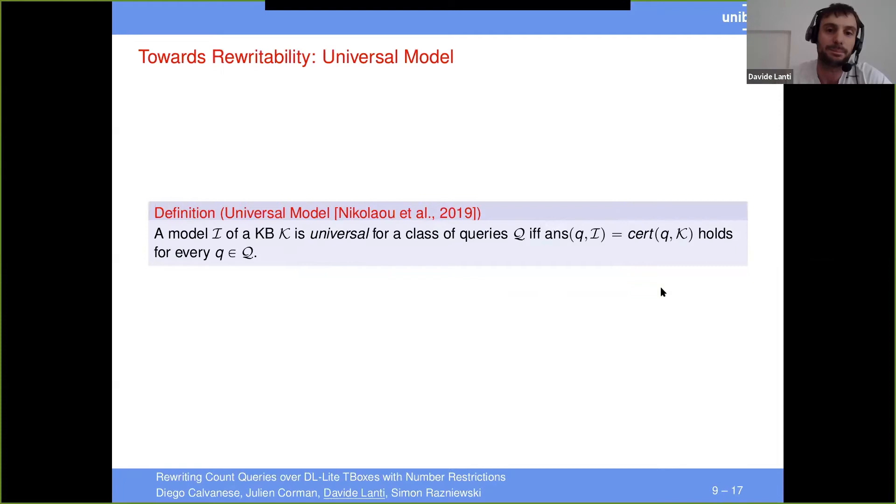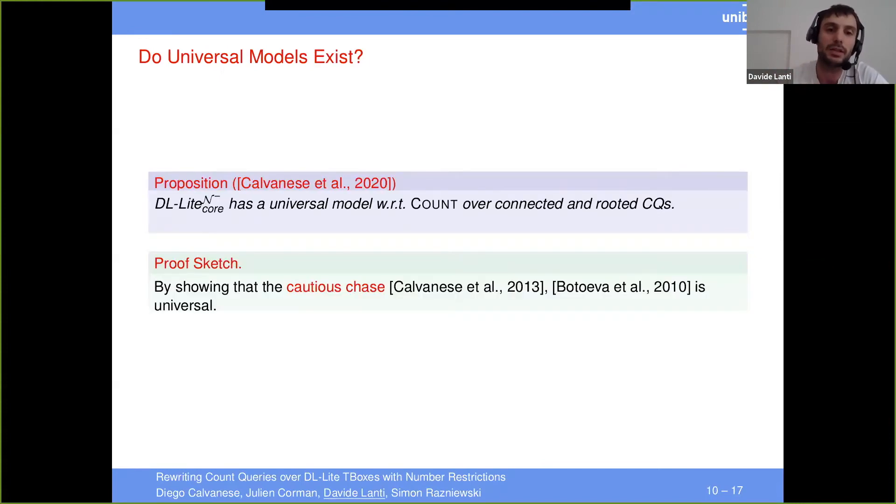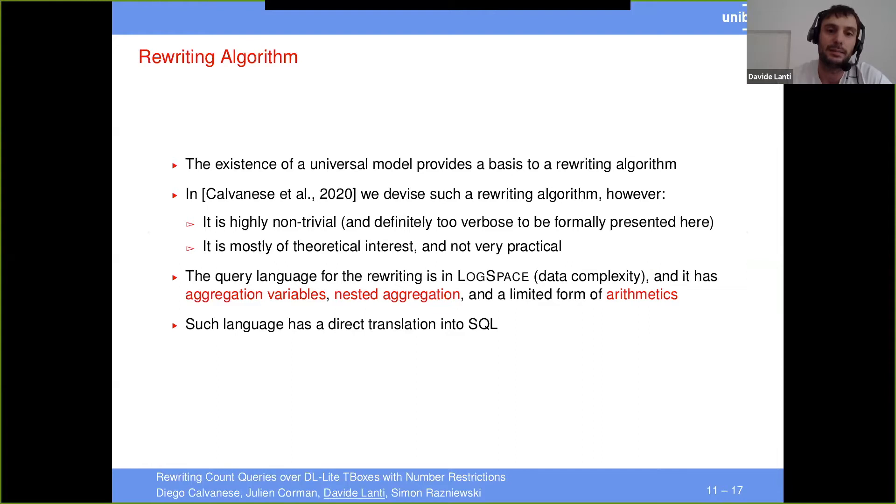And now we move towards the rewritability. So a hint that rewriting could exist is the fact that there is a universal model that is a model that allows you to retrieve the certain answers. This is the definition by Nikolau. And in Calvanese et al. 2020, it has been shown that this logic, DL-Lite core and minus has a universal model with respect to count over connected and rooted CQs. And the proof is by showing that the cautious chase, that is the chase that does not add individuals blindly, is a universal model with respect to this problem.